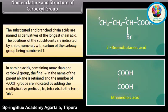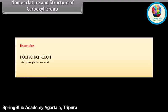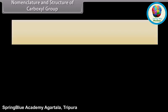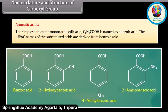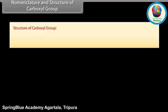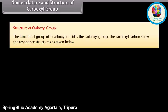...to the term -oic. The simplest aromatic monocarboxylic acid, C6H5COOH, is named benzoic acid. The IUPAC names of substituted aromatic acids are derived from benzoic acid. Structure of the carboxyl group: the functional group of a carboxylic acid is the carboxyl group. The carboxyl carbon shows resonance structures.